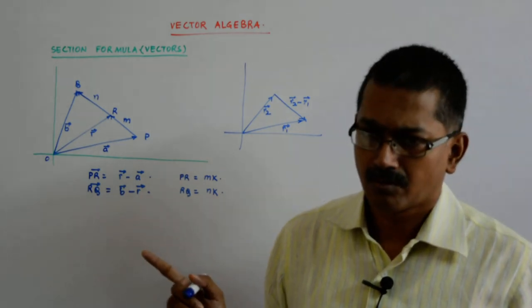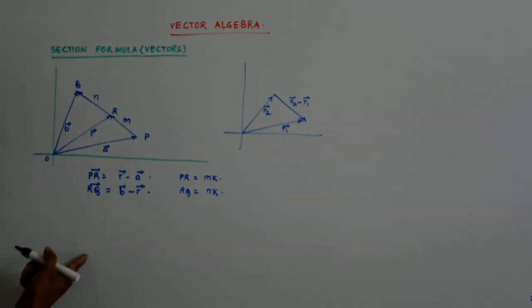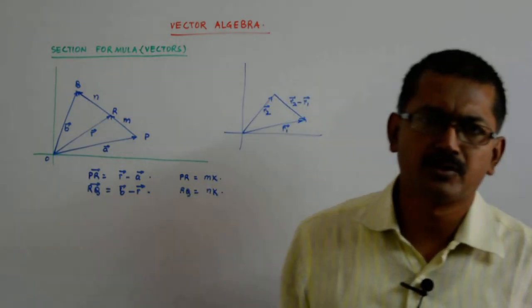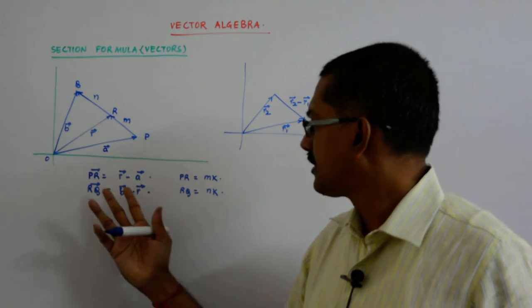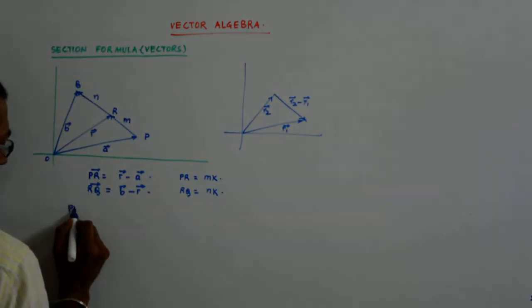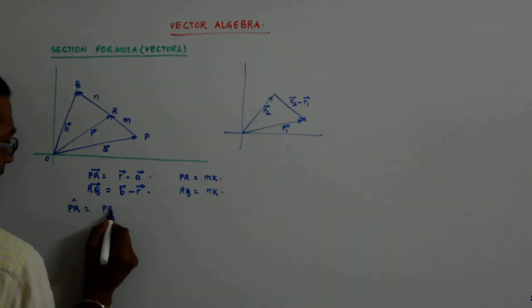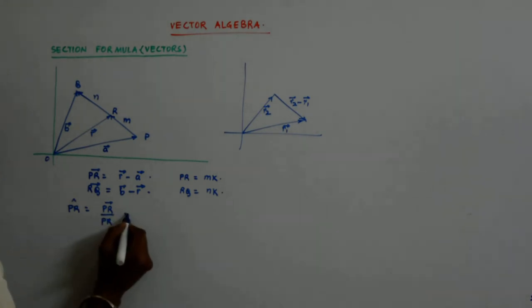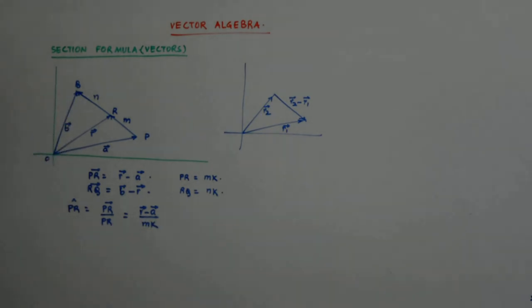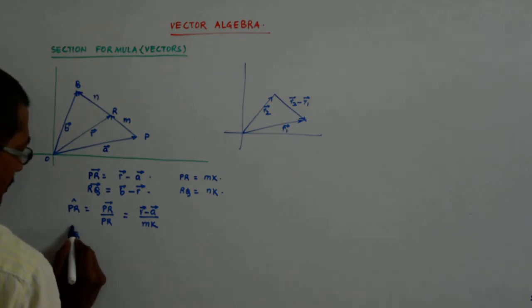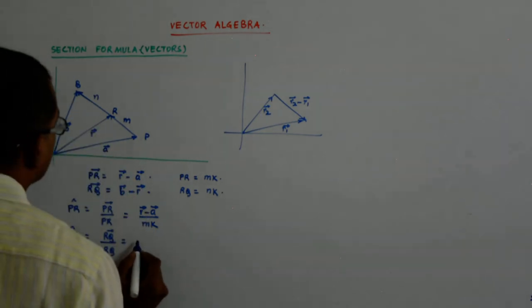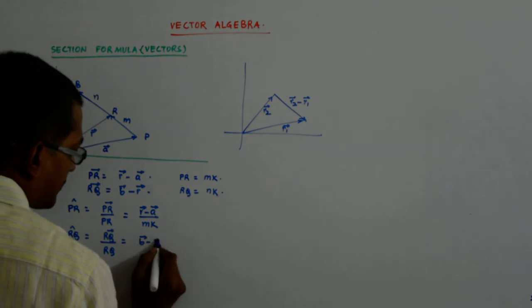So what do I do? Or you think it that this way? How can I make them unit vector? The two, three ways of doing the same thing. See, its length is what? mk. So if I divide it by mk, it becomes a unit vector in this direction. So I am trying to find out this. PR cap is what? Vector PR upon PR. Now vector PR is r minus a, divided by PR is mk. Okay? RQ unit vector is RQ vector divided by RQ. Now RQ is what? b minus r, divided by nk.